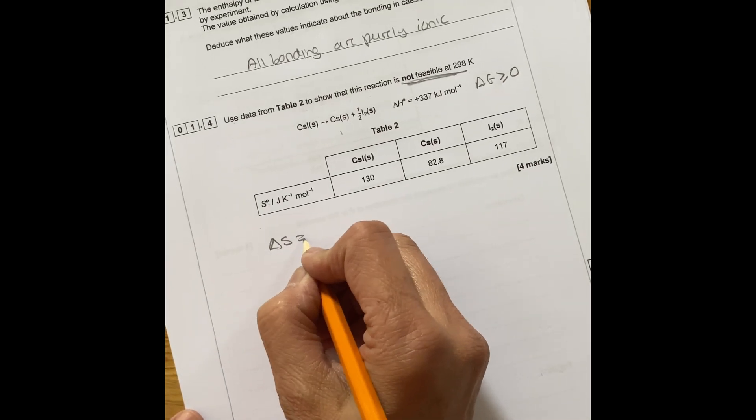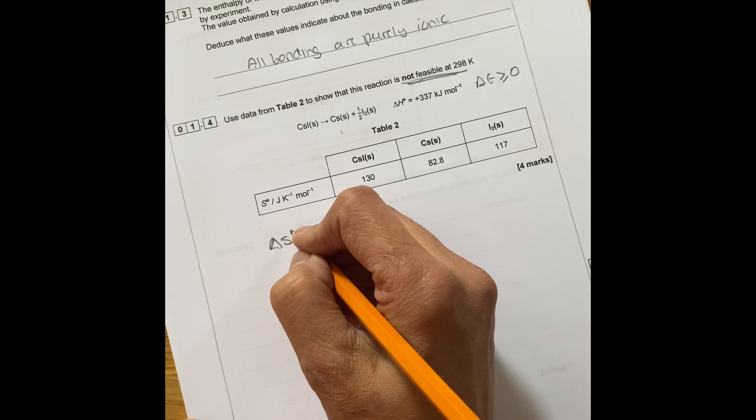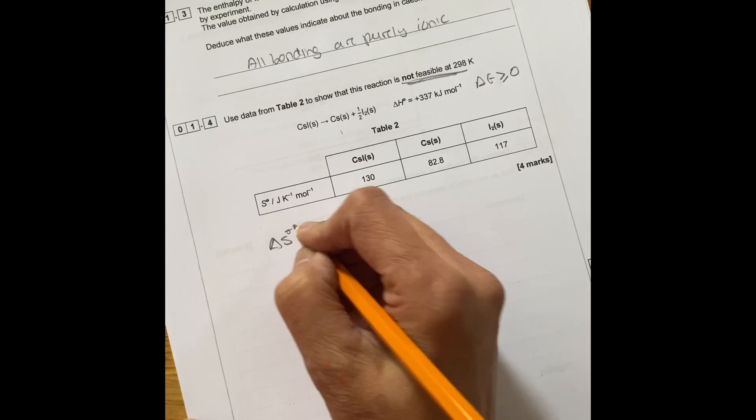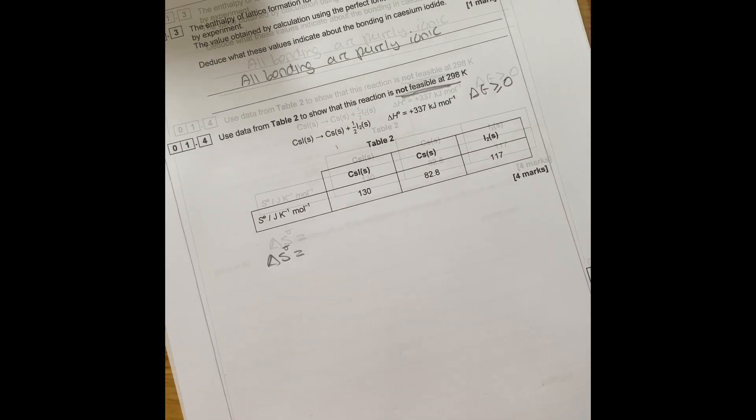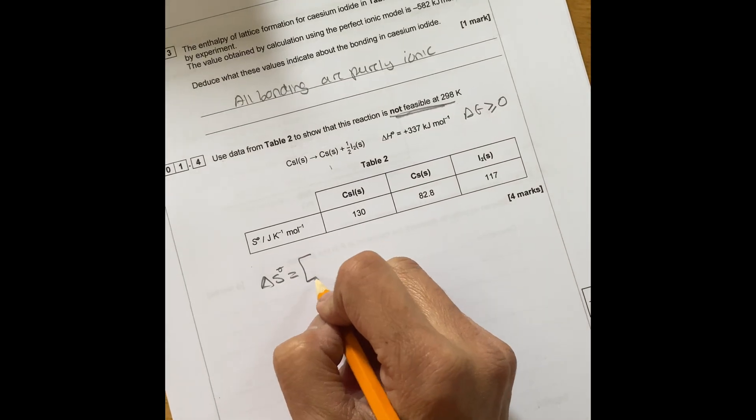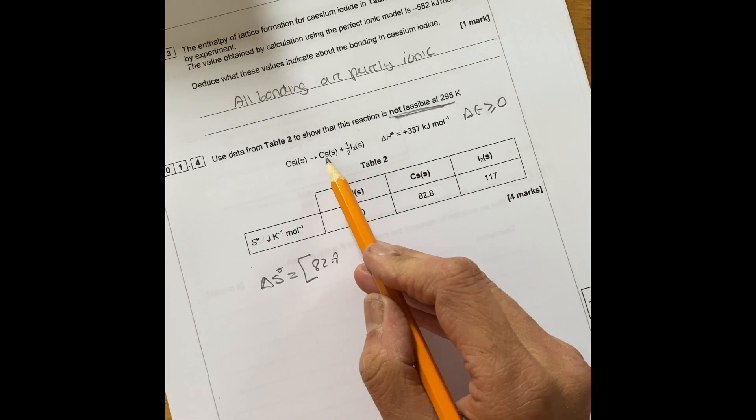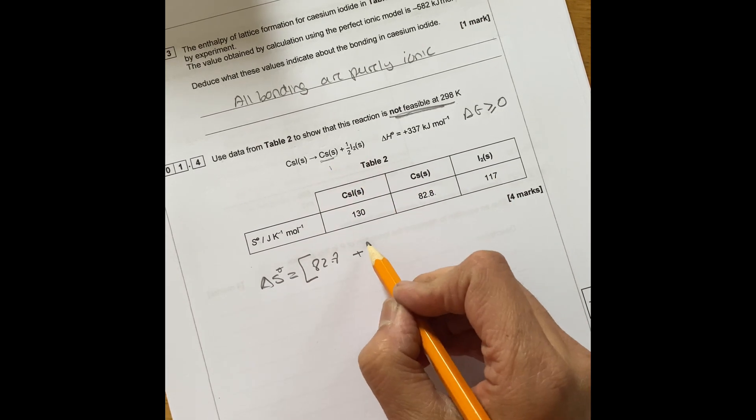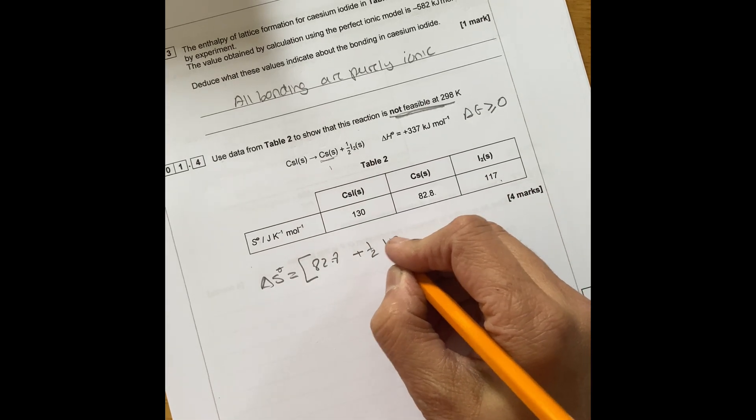So let's work out delta S first. You work out delta S, which is products minus reactants. So you got delta S equals to 82.8, which is your product there, plus half of iodine, which is 117.